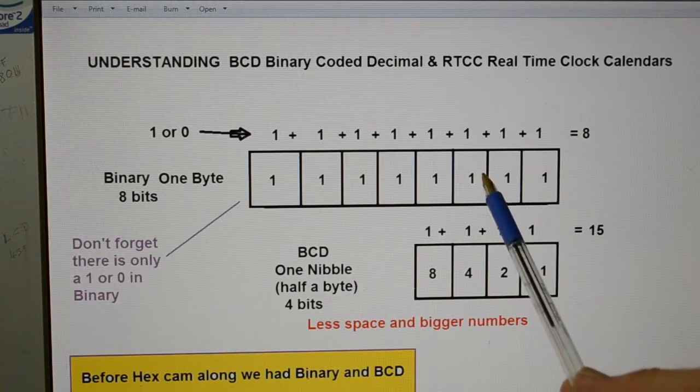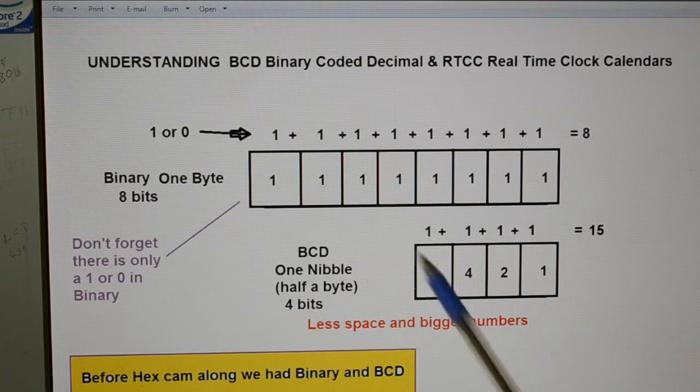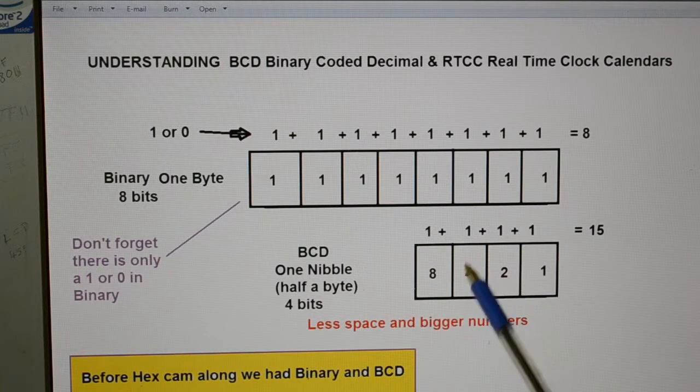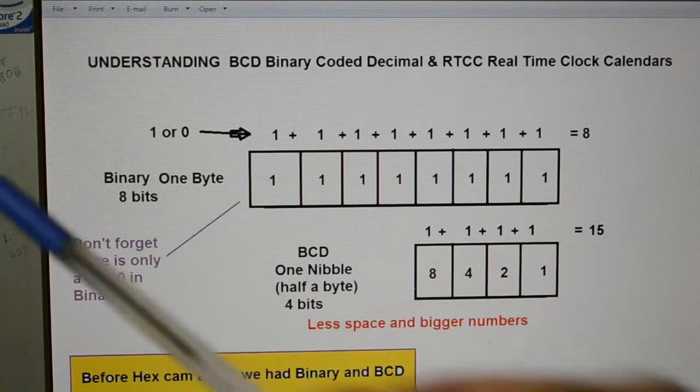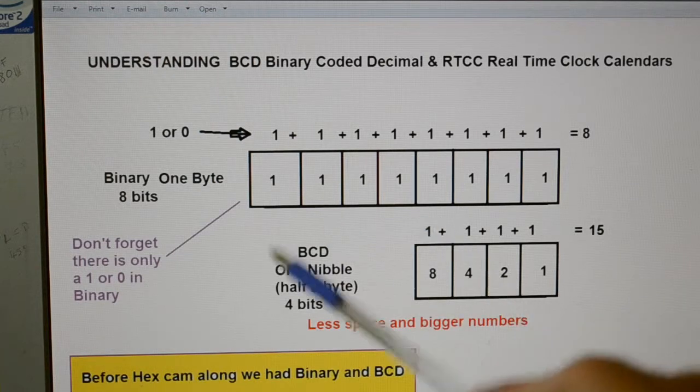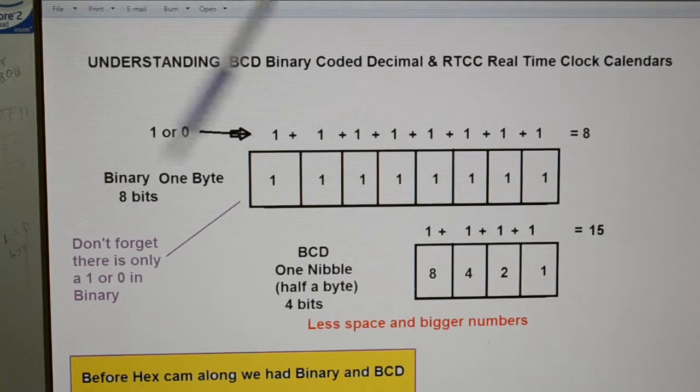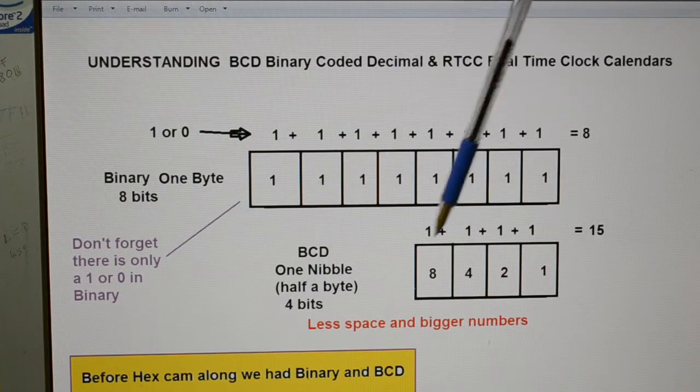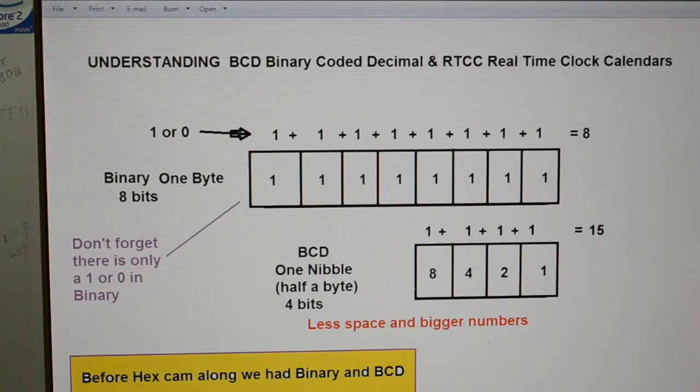So instead of the value equaling 1 or 0, equal 1, 2, 4, 8, 10, 20, 40 and so on and so forth. There's just 4 bits of a byte. They call it a nibble. So this is the first nibble. I'll show you a bit later. So this is before hexadecimal and everything came along.